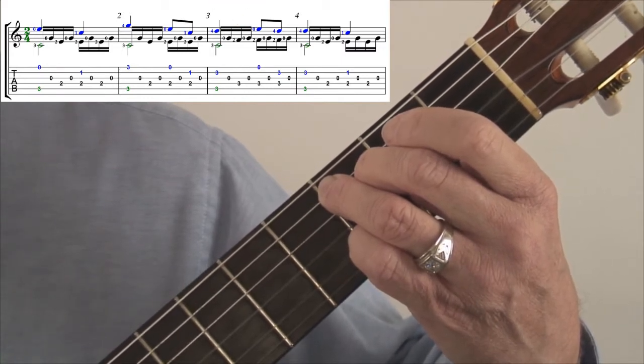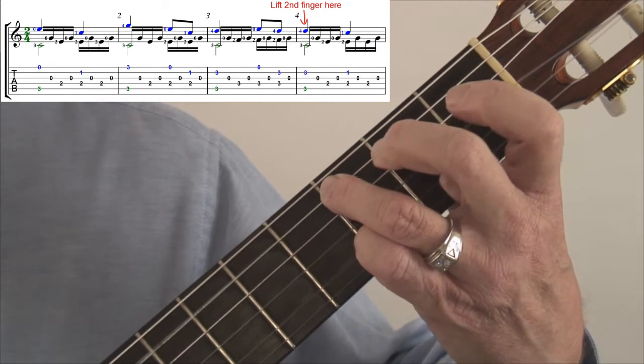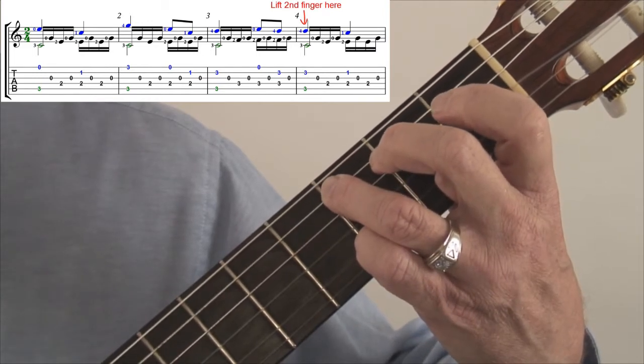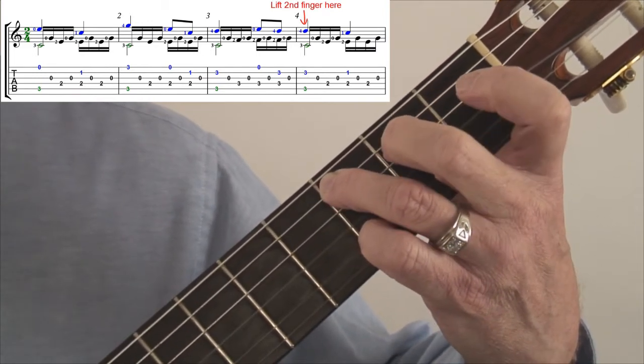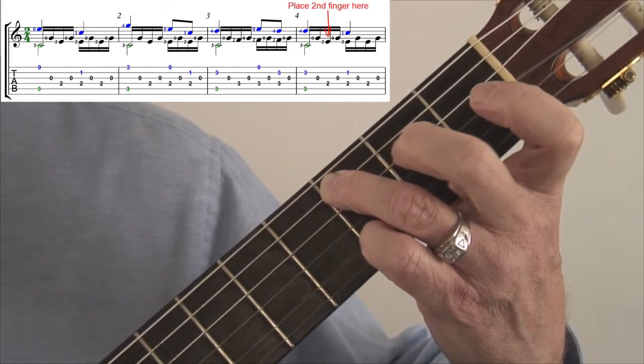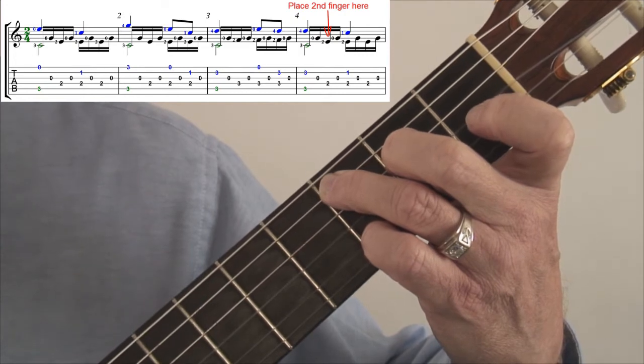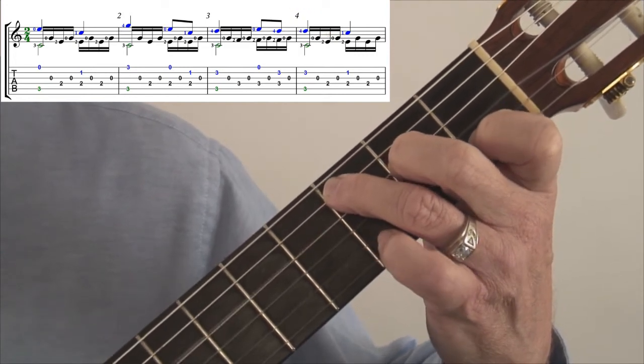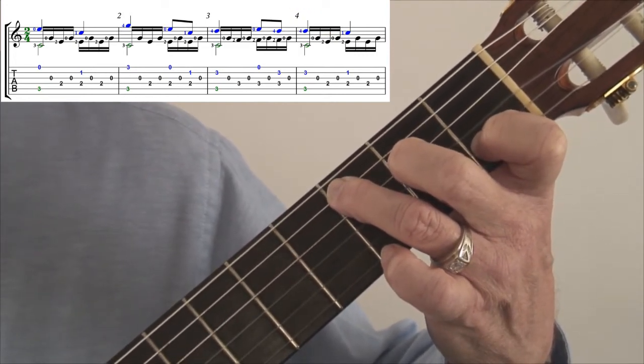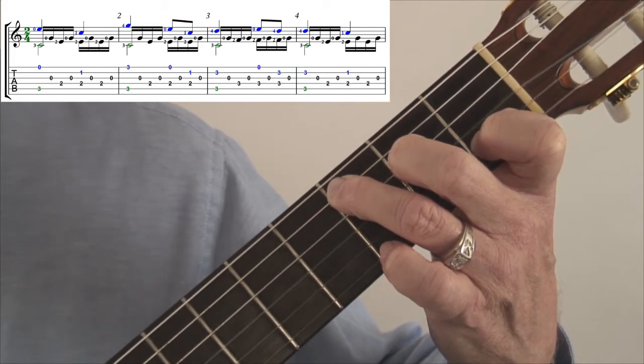Then measure four. When you hit the downbeat, lift the second finger off of the F. Play the open G. And then reset the second finger onto E right when you need it. And then finally, you'll lift the little finger and land the first finger on the C.